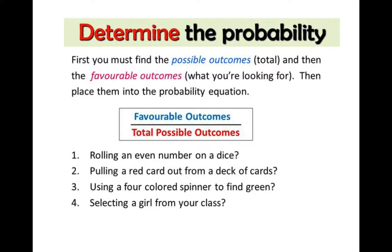As a quick reminder of the formula for probability: first find the favorable outcomes, then place that over the total possible outcomes. This is just a reminder of how to write probability as a fraction.